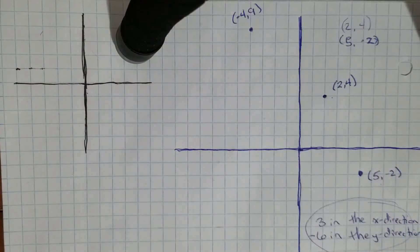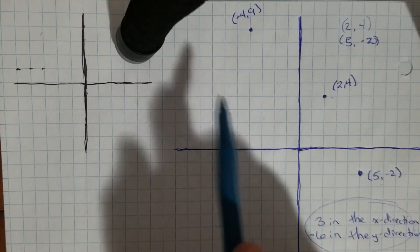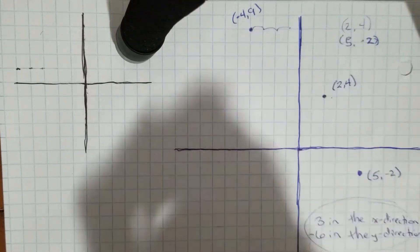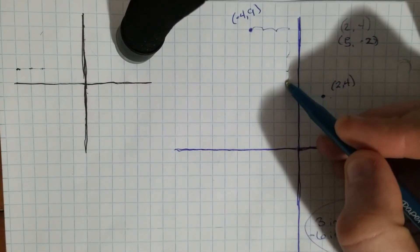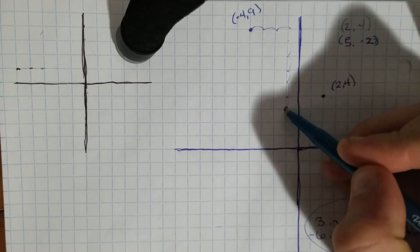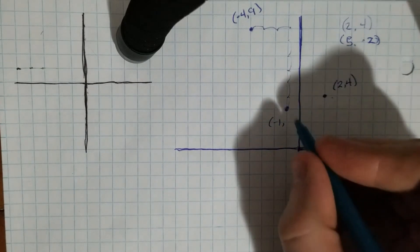Again, there's two ways we could do it. We could either look here at the point and we could say okay, three in the X direction - well one, two, three - and then negative six in the Y: one, two, three, four, five, six. Here's our new point which is at (-1, 3).